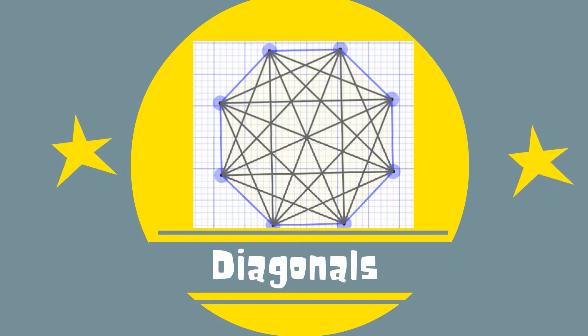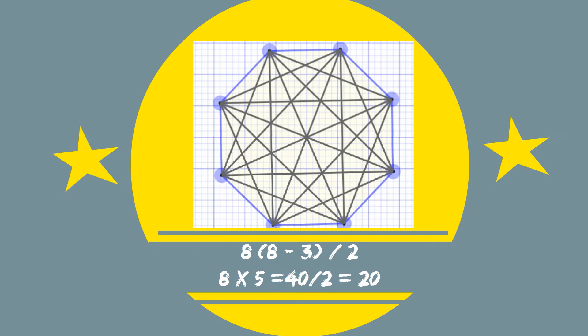You can find the number of diagonals by using the following formula. Take n times (n-3) divided by 2 and n is the number of vertices. Again if you do the math you will see that it has 20 diagonals.